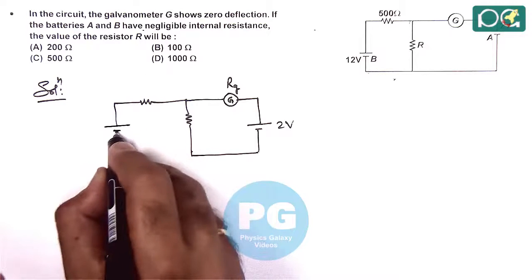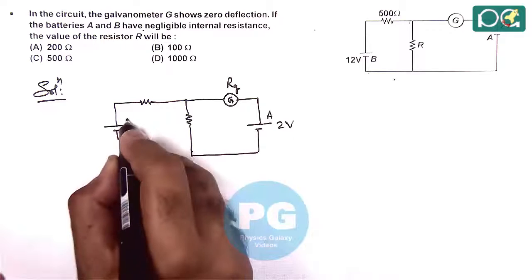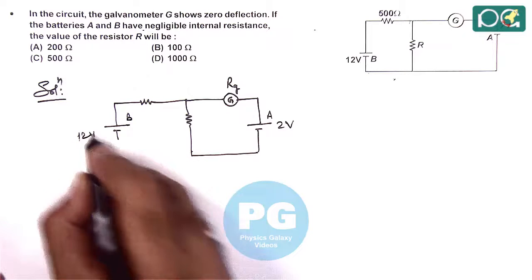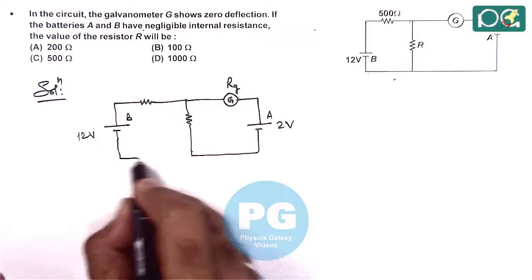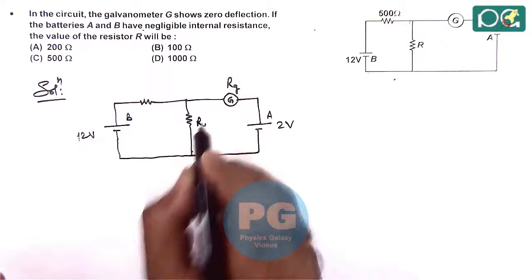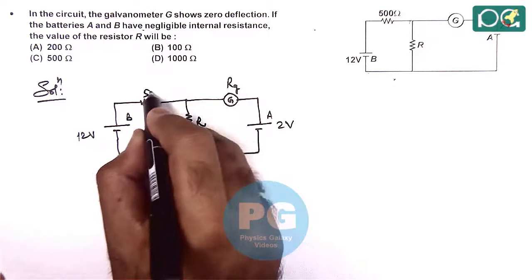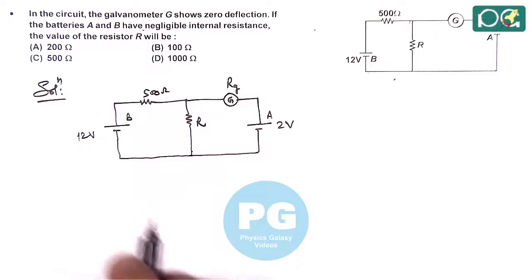Here is battery B, battery A, battery B of 12 volt EMF. In this situation, this resistance R, this is 500 ohm resistance. We can solve the circuit using KCL.